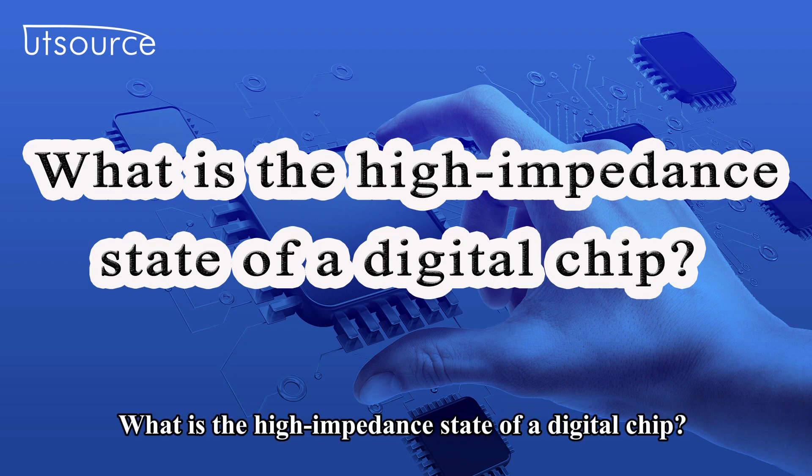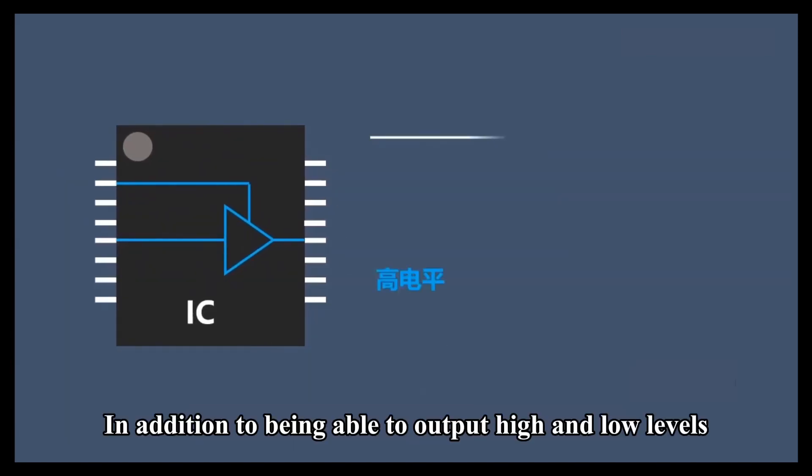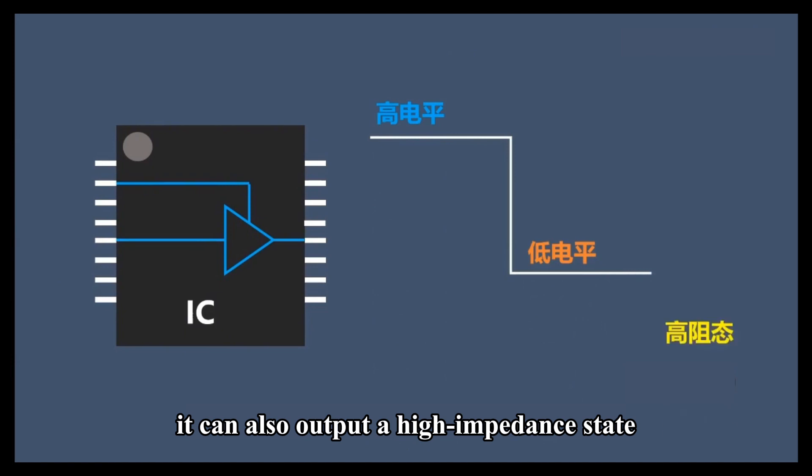What is the high impedance state of a digital chip? This is a digital chip with a tri-state output. In addition to being able to output high and low levels, it can also output a high impedance state.